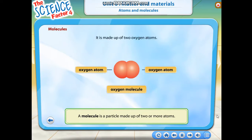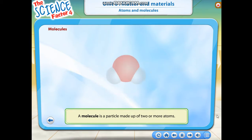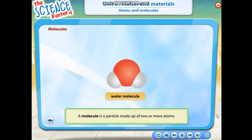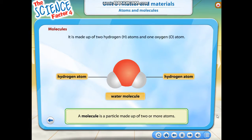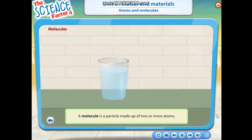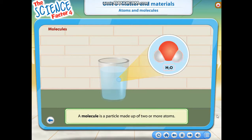The oxygen molecule is made up of two oxygen atoms. This is a water molecule; it is made up of two hydrogen atoms and one oxygen atom. That is why the water molecule is known as H₂O.